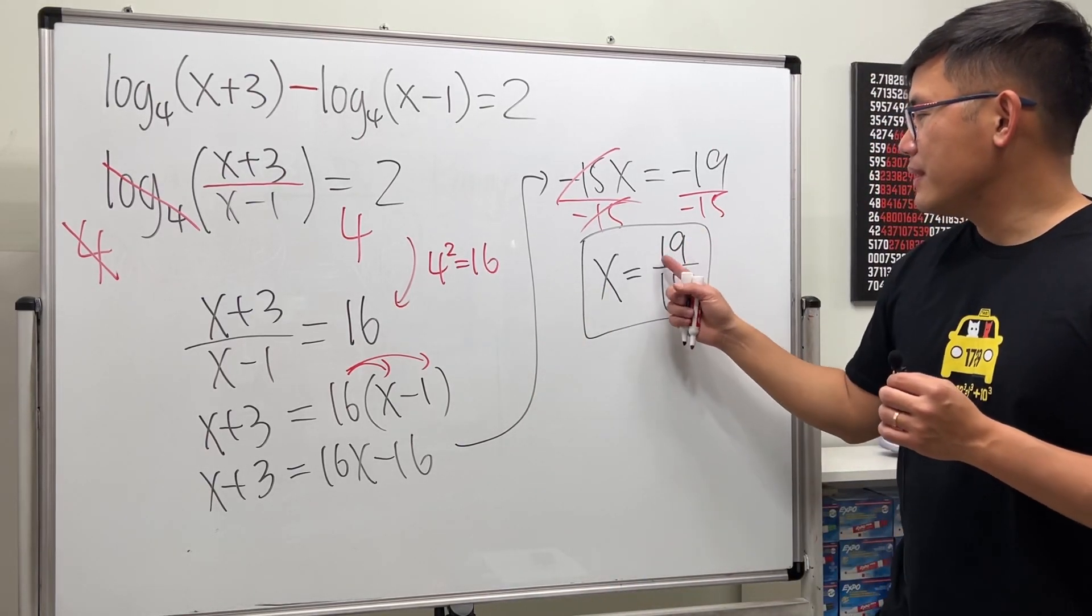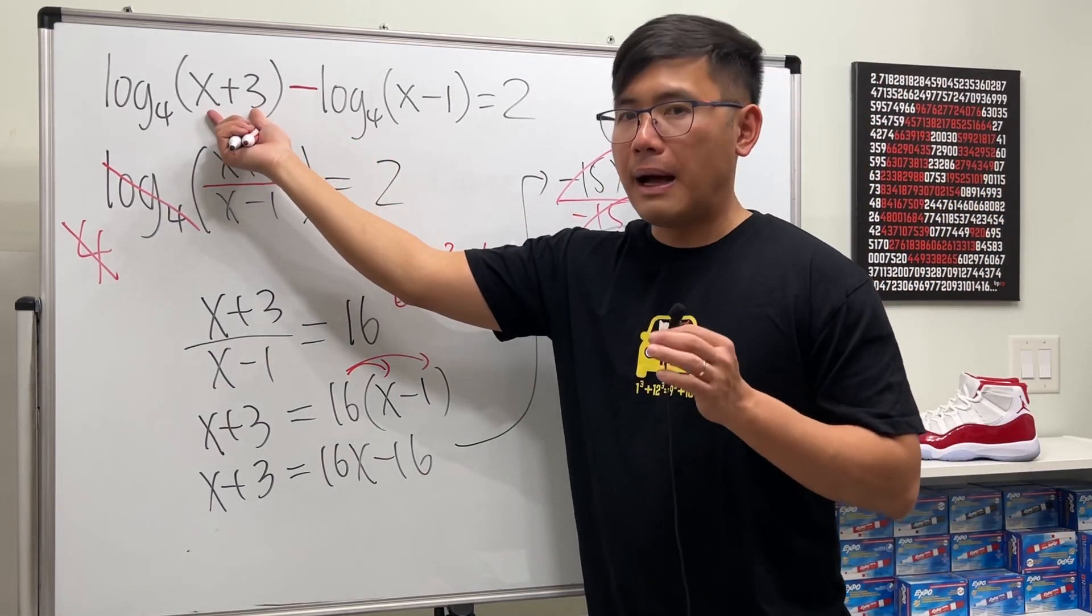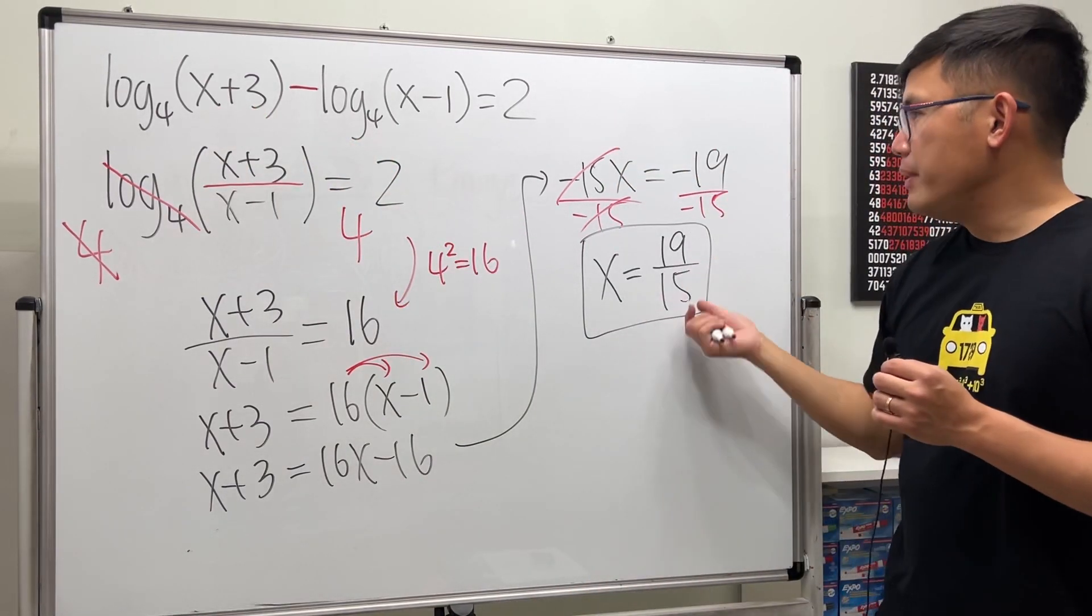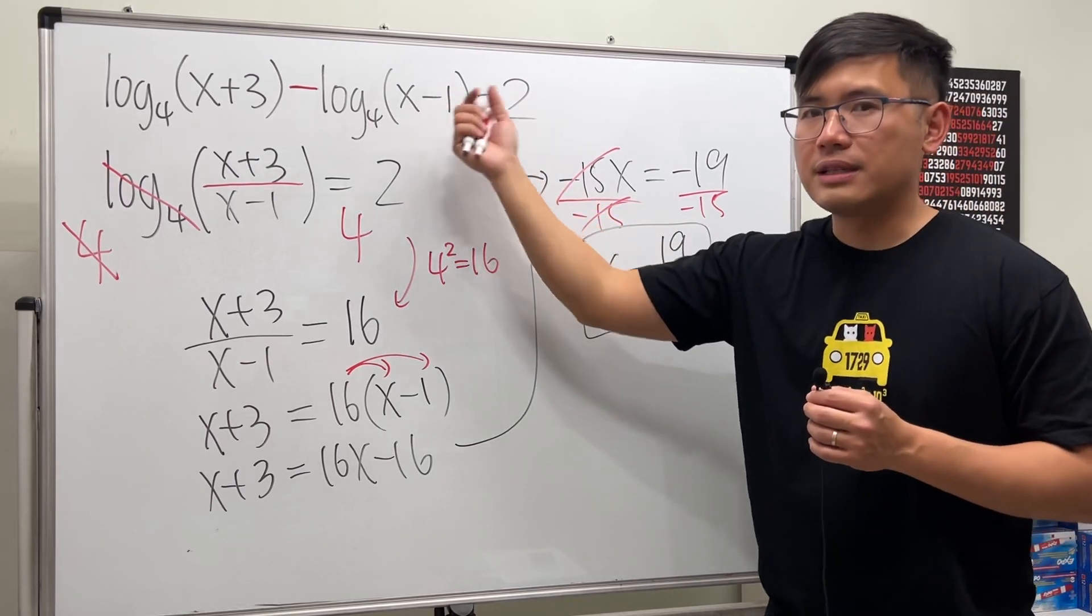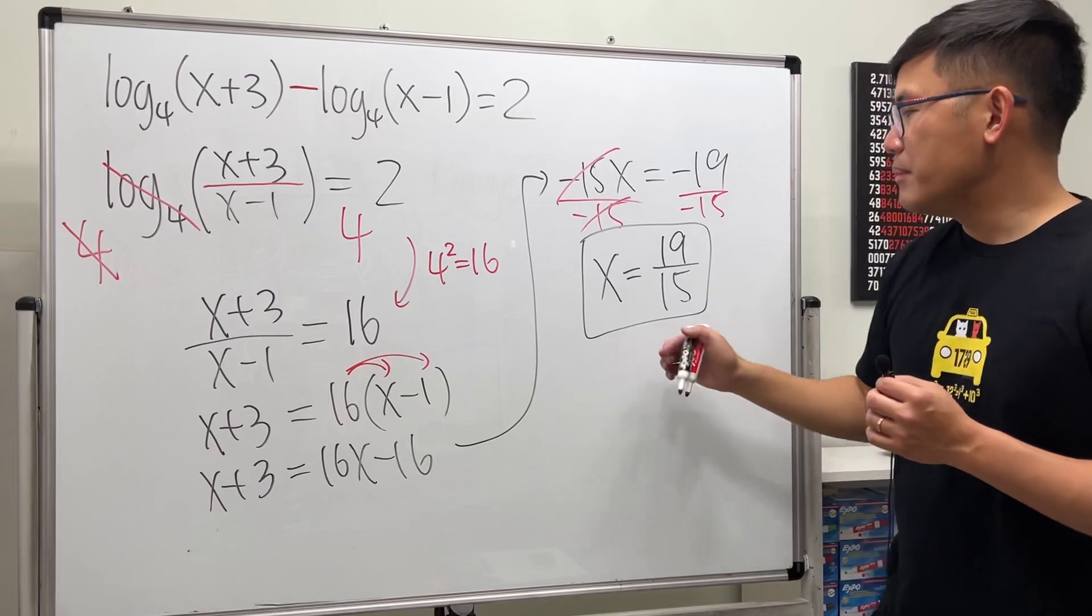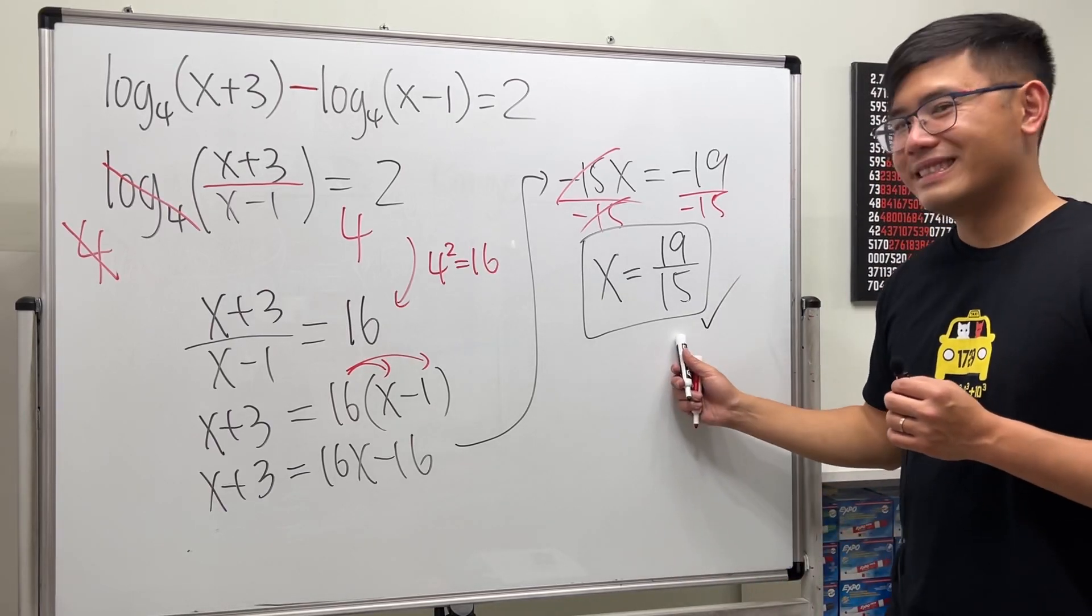This is positive 19/15. If you add it with 3, it's definitely positive. This is bigger than 1, so when you put it here and minus 1, the inside is also positive. That means this is a legitimate solution. That's it.